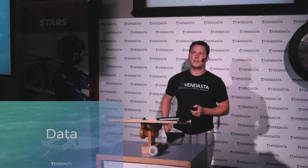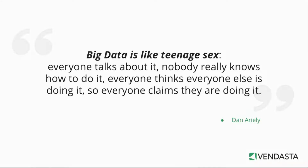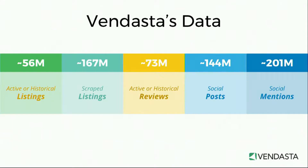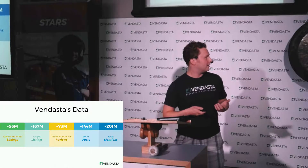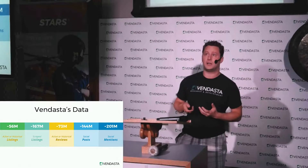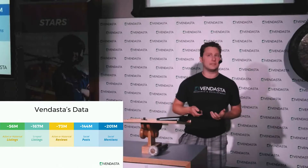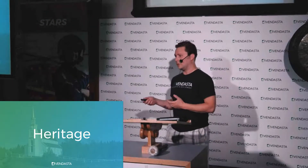I'm going to give a bit of a talk on data. Here at Vendasta we deal with a little bit of it. I found a quote when I was looking for how to start this talk — Vendasta maybe isn't big data yet but we do deal with a lot of it. We're dealing with many things: 56 million listings just active and historical, we've looked up over 167 million just to store in our database, and 201 million mentions active and historical. So we are storing a lot of data in different ways.